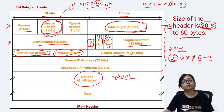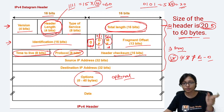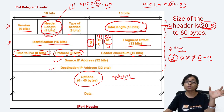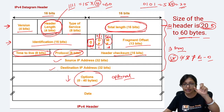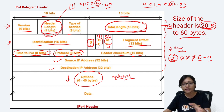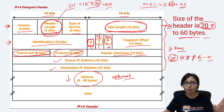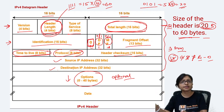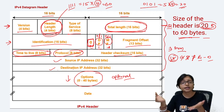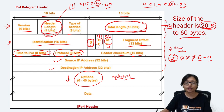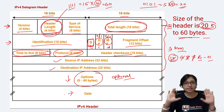Next is the Checksum — 16 bits for error checking. After that is the Source Address (where the packet is coming from) and the Destination Address (where it will go). After that, this 40-byte section is optional. If the header length is more than 20 bytes, there is an optional part. If the header length is exactly 20 bytes, there is no optional part. For example, if header length is 30 bytes, then 30 minus 20 equals 10 bytes of optional part.